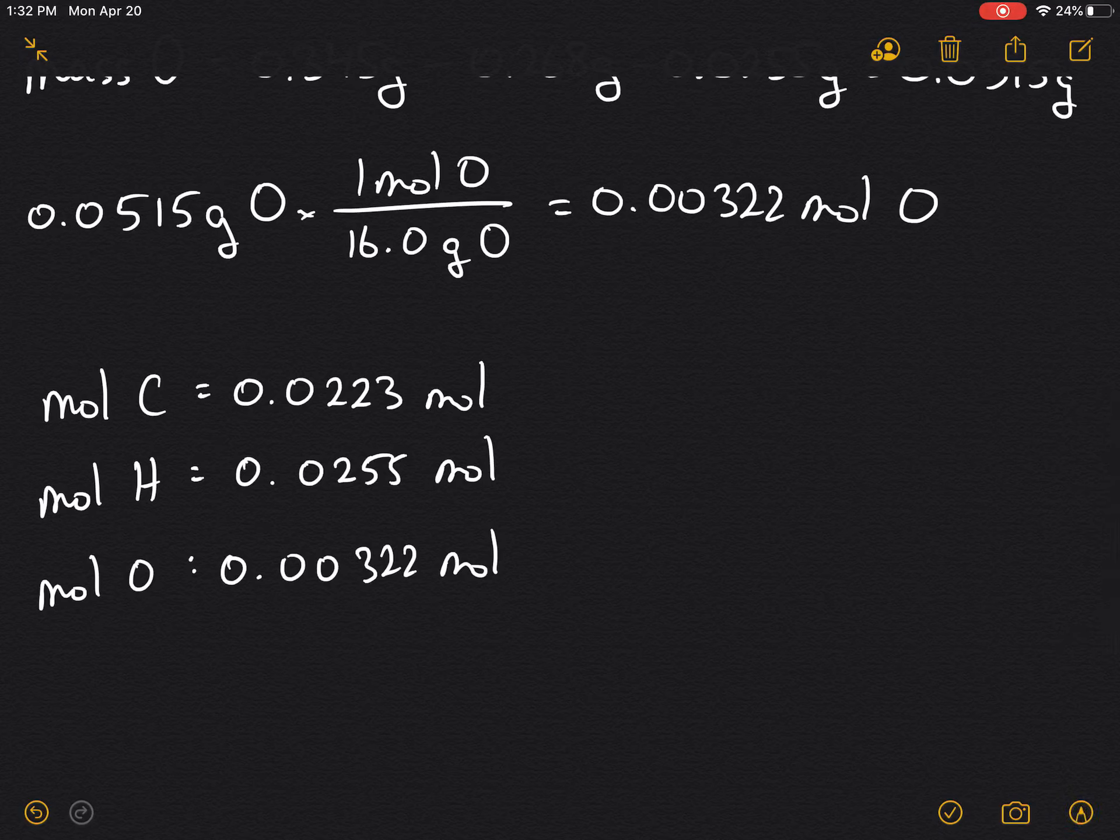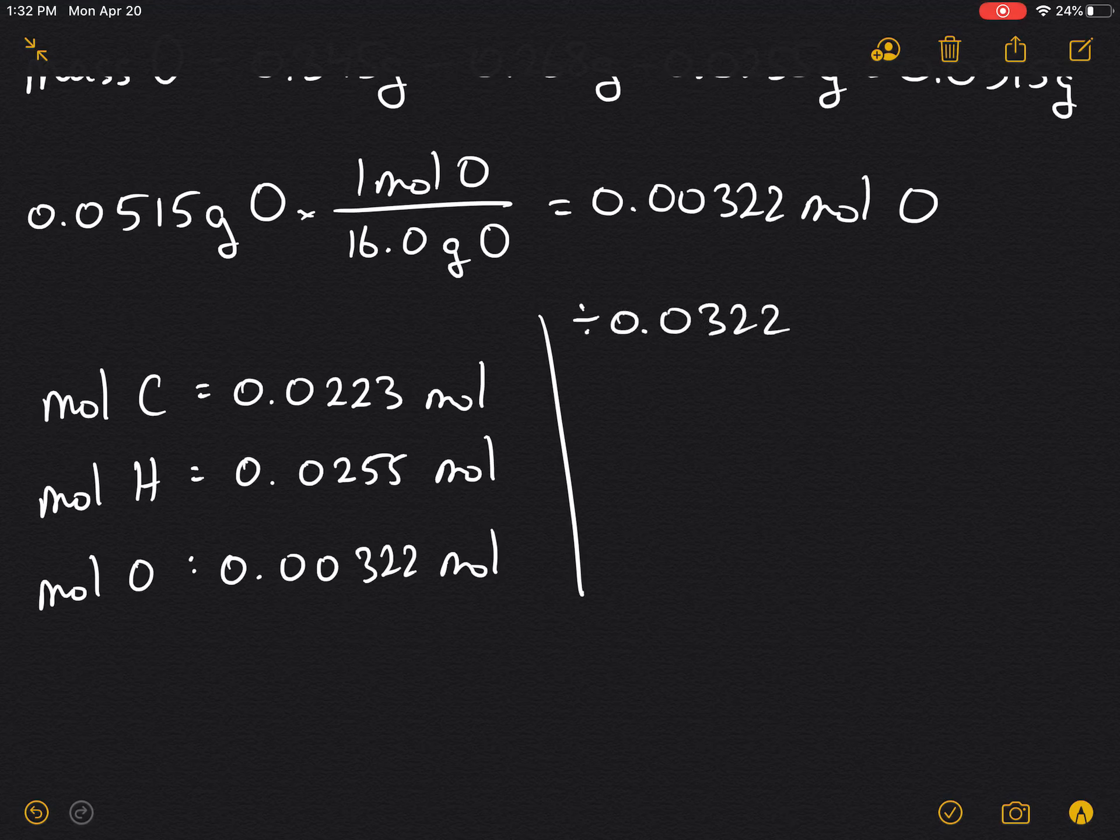We're going to divide all three by the smallest, so we're going to divide by 0.0322 to give one there.